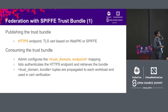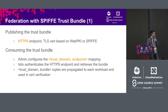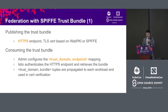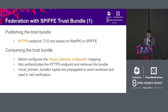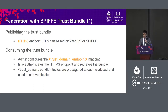For federation with the SPIFFE trust bundle: there's a publishing side and a consuming side. The publishing side needs to expose an HTTPS endpoint encrypted via TLS certificate based on WebPKI or the SPIFFE standard. The consuming side — the Istio admin — configures a mapping from the trust domain to the endpoint. When Istio gets that mapping, it authenticates the endpoint, retrieves the bundle, builds a message containing trust domain and bundle tuples, and propagates them to the workloads so they can use it in certificate verification.